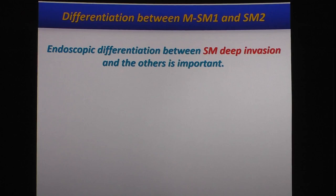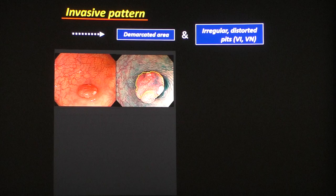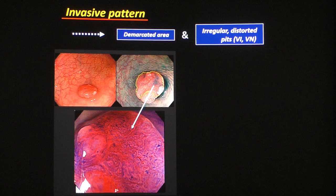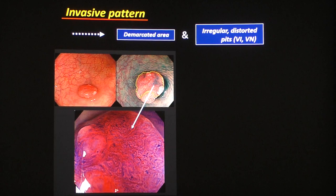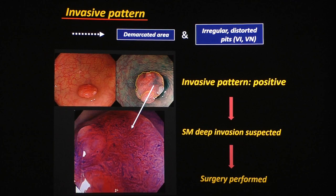I'd like to introduce one very useful finding called invasive pattern. Invasive pattern is defined as a demarcated area, and inside the demarcated area, if you see 5I severe irregular pits, the lesion is considered positive for invasive pattern. After spraying Indigo Carmine, we can observe the demarcated area, and inside, we can see very severe irregular pits. In that case, deep submucosal invasion is suspected. Even despite the small size of the lesion, this patient was referred directly to surgery without endoscopic resection, because of suspected deep submucosal invasion. This lesion was indeed a deep submucosal invasive cancer.